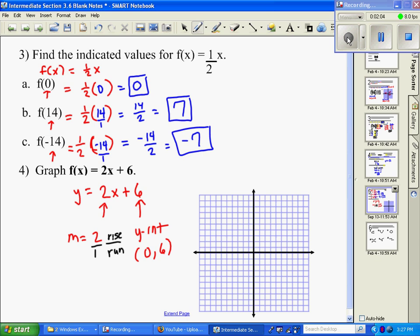Now we start at our y-intercept, so start at your point 0, 6. So 1, 2, 4, 5, 0, 6, and put a dot. Okay, that's your starting point on this.